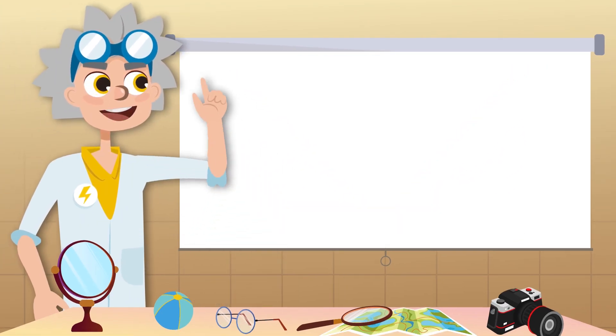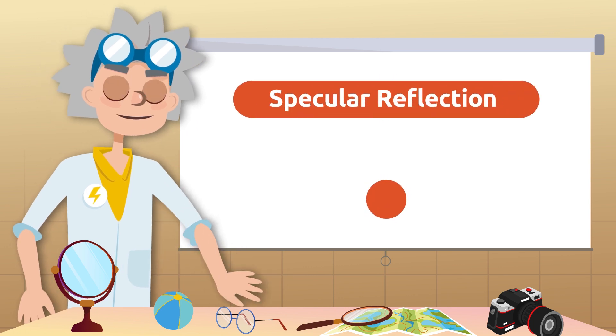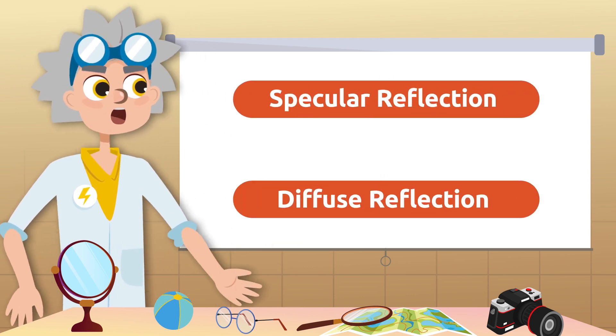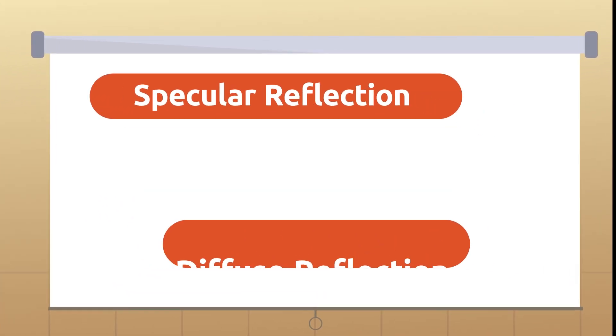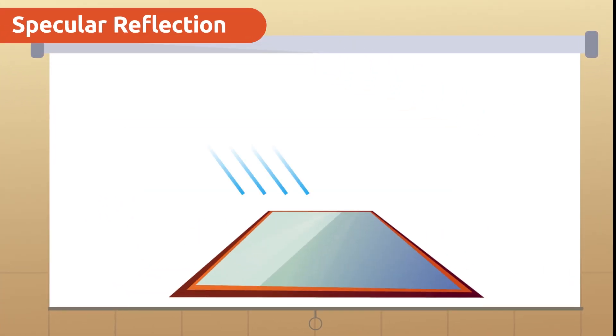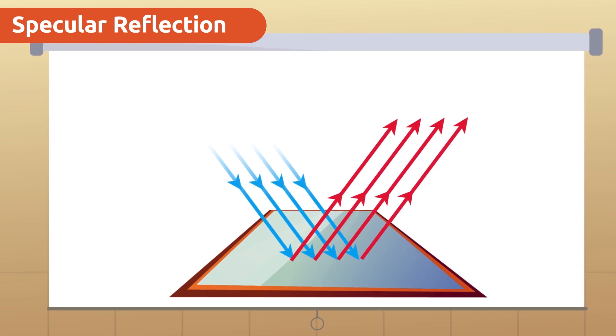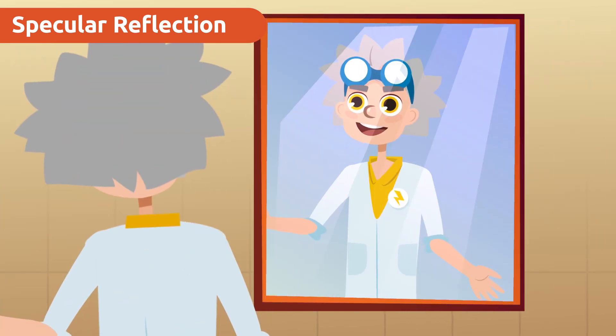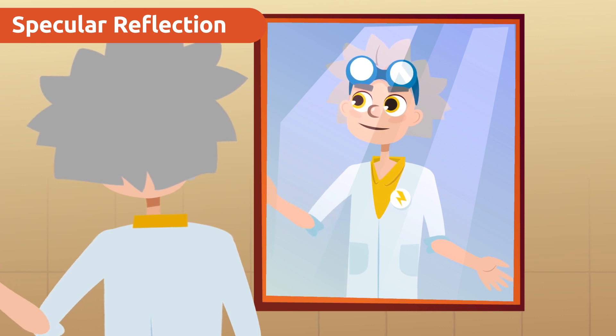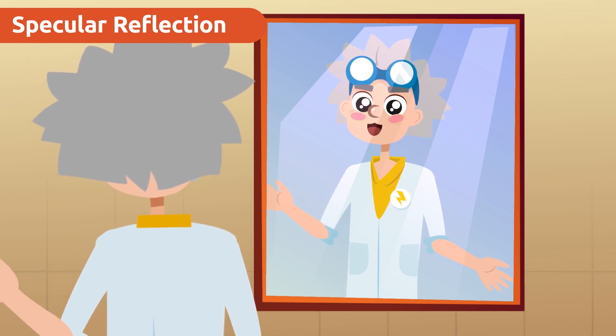We can differentiate between two types of reflection, specular and diffuse reflection. When every incident ray is reflected in the same direction, specular reflection occurs. This property allows us to see ourselves reflected in a mirror or shiny surface. I look great today!